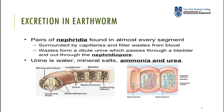Now we will discuss the excretory system in earthworm. The tubular excretory system in earthworm is called metanephridium. It has an internal ciliated opening called the nephrostome. The nephrostome collects coelomic fluid. Collecting tubules are covered by a network of capillaries.